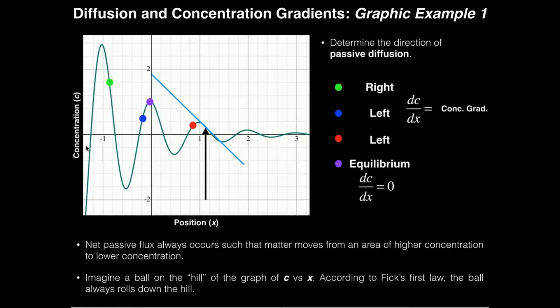In the previous video we looked at a graph of concentration versus position and we looked at different points on here and determined what the net direction of passive diffusion or flux is.